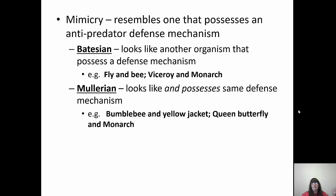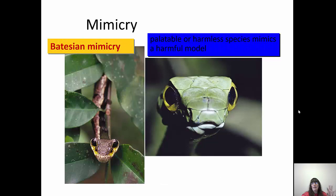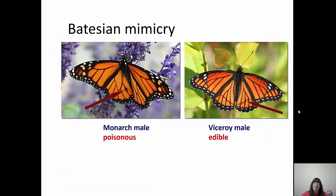If you see a yellow and black striped insect, you're probably not going to stick around to find out what kind it is. Comparing a king snake to a coral snake is an example of Batesian mimicry — as the saying goes, red next to yellow will kill a fellow, red next to black venom lack. A hawk moth larvae mimics a green parrot snake: the hawk moth larvae is harmless, the green parrot snake is harmful. The monarch butterfly and viceroy butterfly are another example — monarchs are poisonous, viceroys are edible but look enough alike to avoid predation.